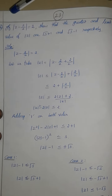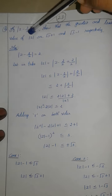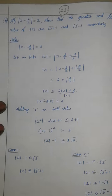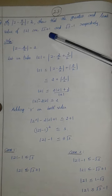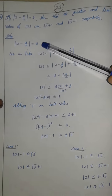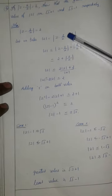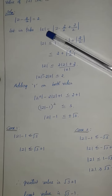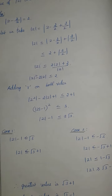Question number 6 from Exercise 2.5. If modulus of Z minus 2 by Z is equal to 2, find the greatest and least value of mod Z.